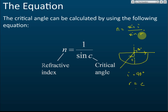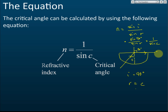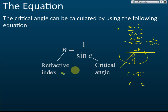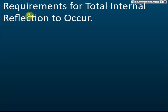If we substitute this into the equation, we get sine 90 degrees over sine r. Using a calculator, sine 90 degrees equals 1, so we have n equals 1 over sine c. This is the formula to find the refractive index from the critical angle: n equals 1 over sine c.